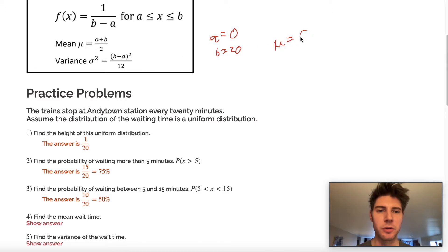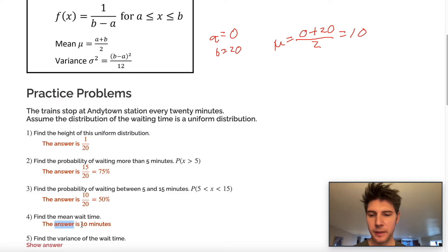So our mu equals 0 plus 20 over 2. And that's 10. So if we check this answer, that's 10. So all you do is just take your two endpoints, add them together and divide by 2.